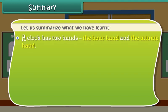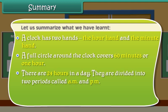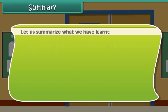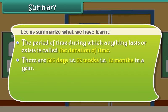Summary. Let us summarize what we have learned. A clock has two hands: the hour hand and the minute hand. A full circle around the clock covers 60 minutes or 1 hour. There are 24 hours in a day, divided into two periods called AM and PM. We can avoid the use of AM and PM by using the 24-hour clock. The duration of time is the period during which anything lasts or exists. There are 365 days, 52 weeks, and 12 months in a year. There are 366 days in a leap year, and February has 29 days in a leap year.